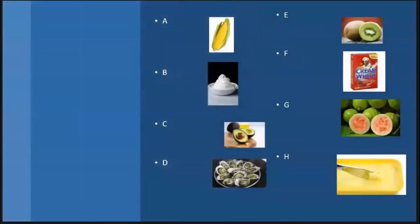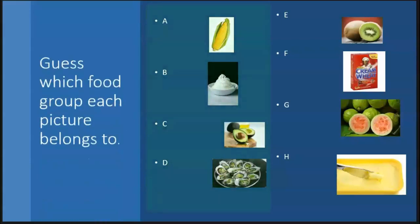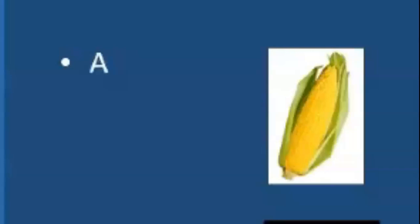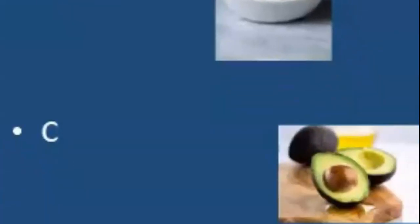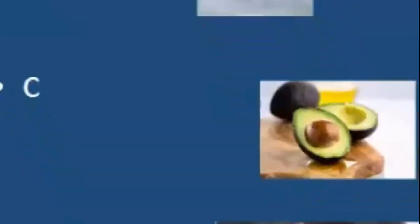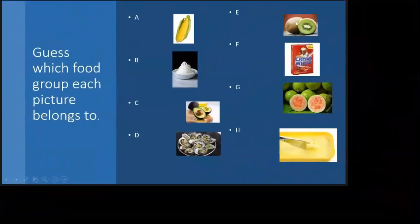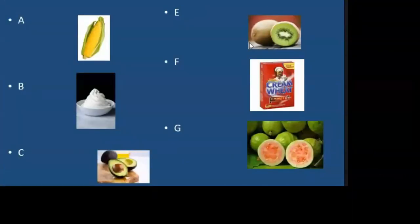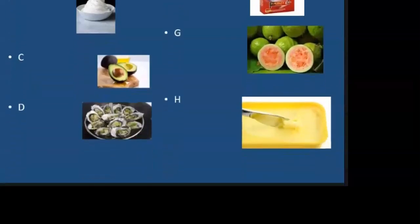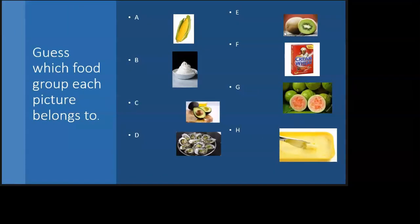What is before me at this point in time? We're seeing a whole list of different foods — things that we are accustomed to eating. So let's guess which food group each picture belongs to. We see pictures A through H. I'm not going to say what the food items are — I want you to visualize and classify each food into a food group. Make sure you write down what food group you think each one belongs to.